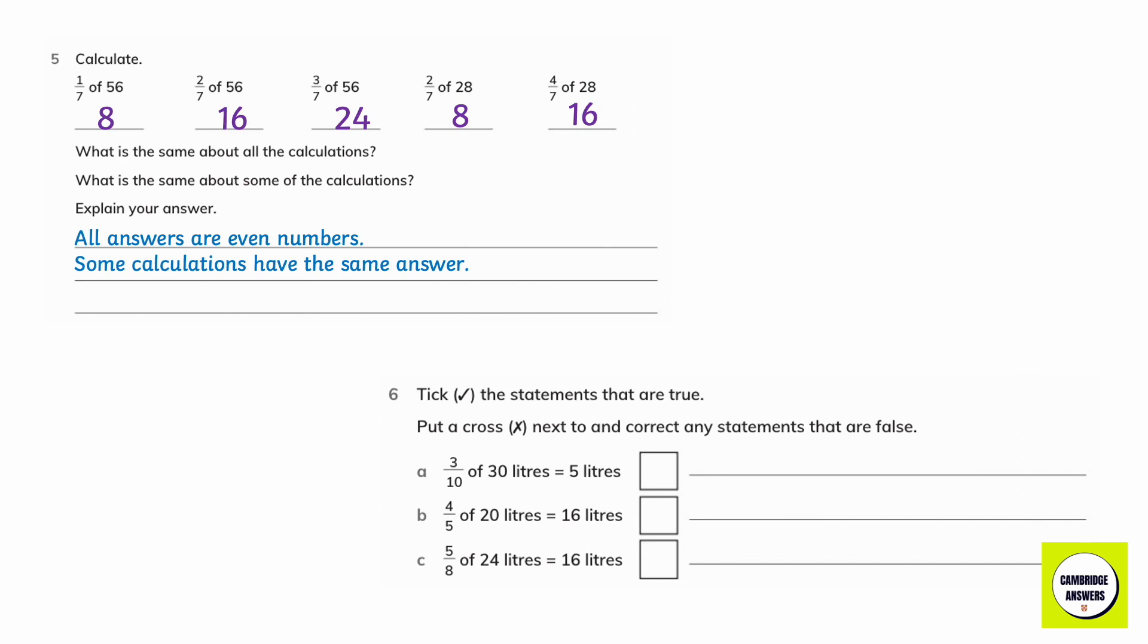Tick the statements that are true, put a cross next to and correct any statements that are false. 3 tenths of 30 litres is 5 litres. This is wrong. The answer is 9 litres.